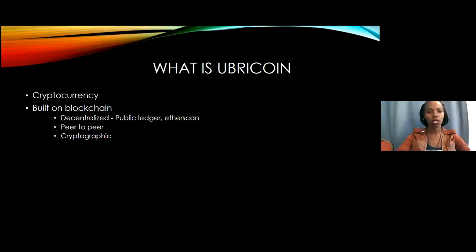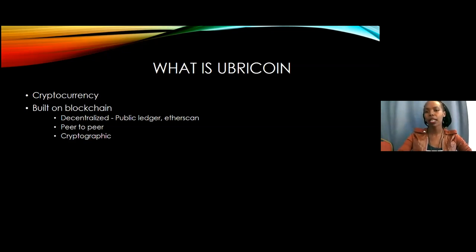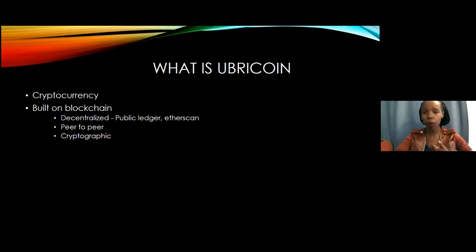Ubicoin is a digital currency built on blockchain technology. When we talk about blockchain technology, we mean that it is very decentralized. Everything that happens with Ubicoin, you can see it in a public ledger called Etherscan. Etherscan is a website where all the transactions of Ubicoin are visible — if today I were to send you one Ubicoin to your wallet, everyone in the world can access that and see that one Ubicoin was sent from my address to yours.